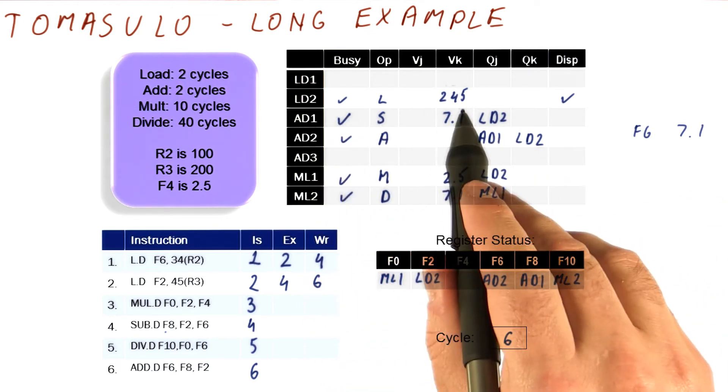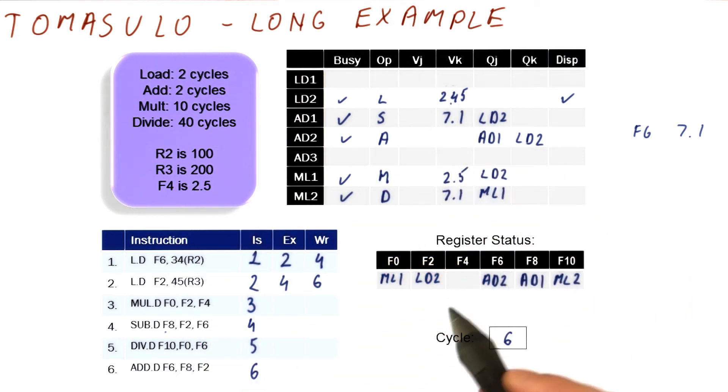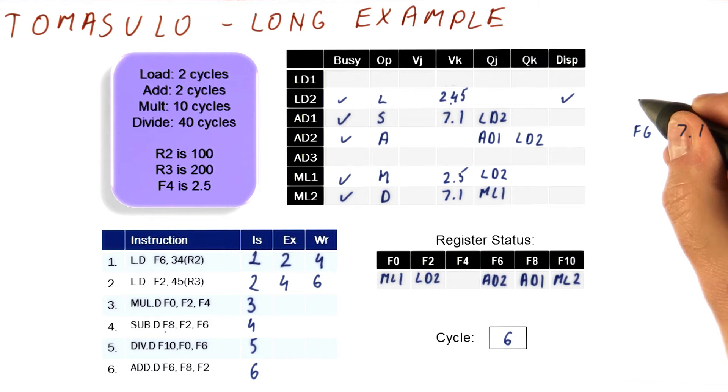First of all, we will deposit the result of the load, which is whatever is at address 245, to the register F2. So let's say that our F2 just became, I don't know, minus 2.5.